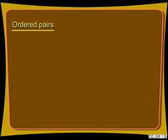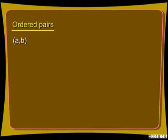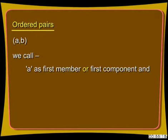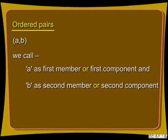First of all we will discuss about ordered pairs. Two numbers A and B listed in a specific order and enclosed form an ordered pair A and B. We call A as first member or first component and B as second member or second component. By interchanging the position of the components the ordered pairs are changed.